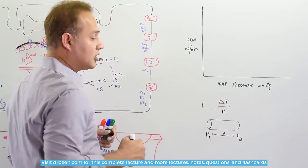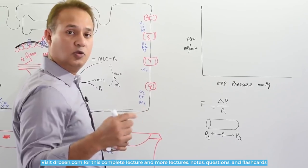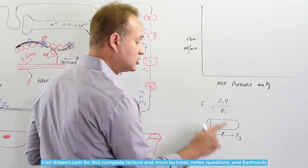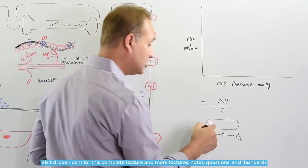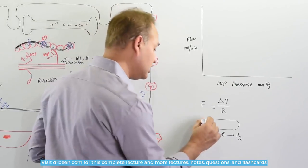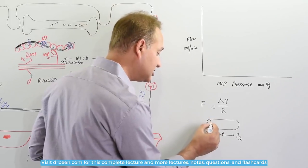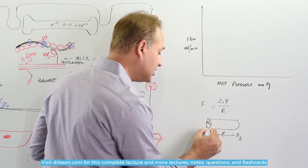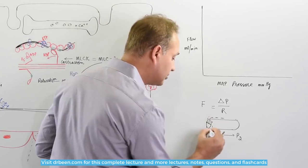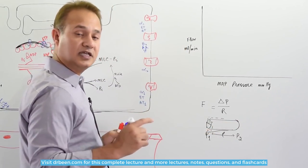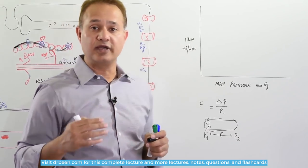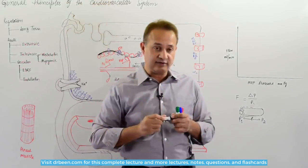When we talk about flow regulation, what we mean is that if the pressure changes, either the volume is changing or the resistance is changing—the diameter is changing. So the blood vessel diameter is becoming bigger or smaller. When the pressure changes, our body regulates the blood flow. And what is the reason for that?